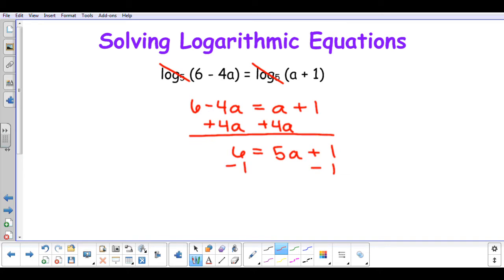I'll subtract 1 from both sides. So I have 5 equal to 5a. I'm going to divide both sides by 5. And my a will equal 1.